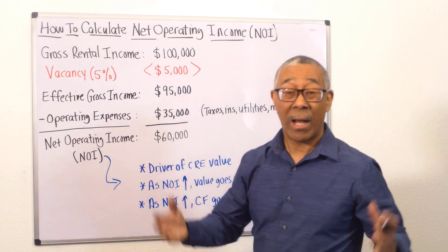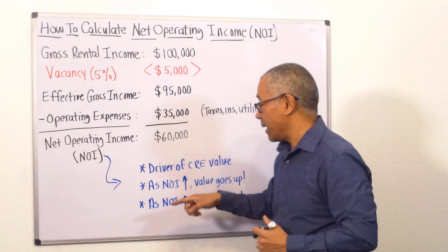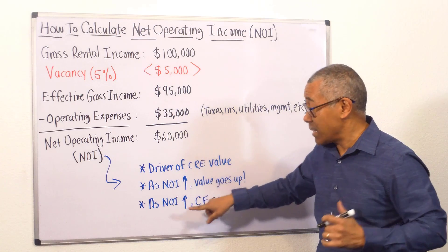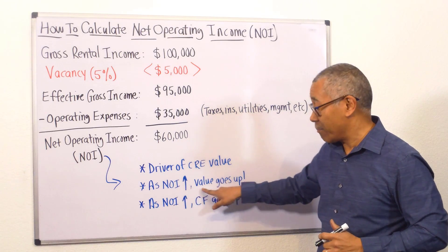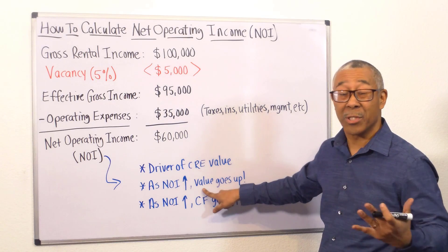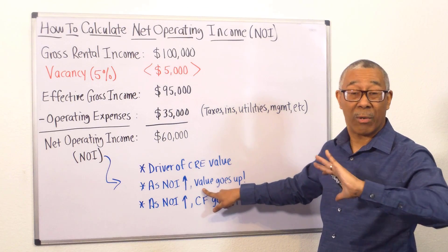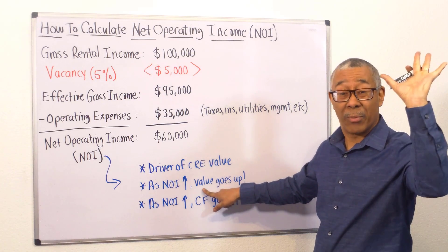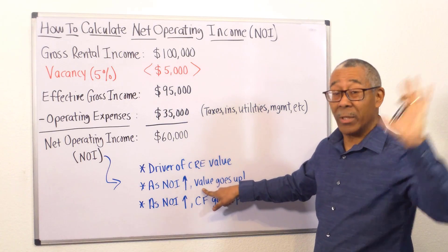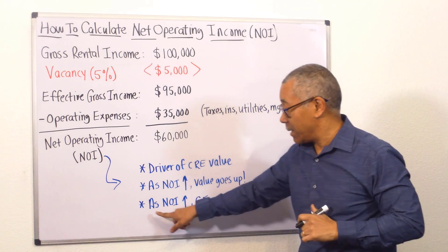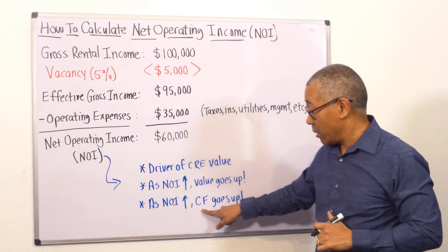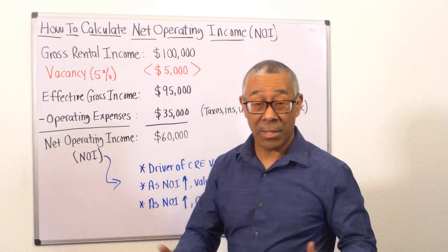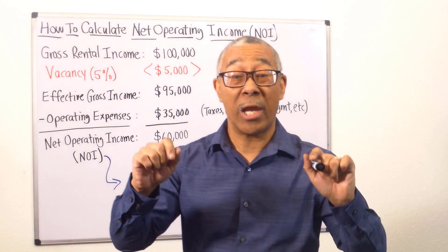Why is the NOI so important? It's because it is the driver of all commercial values. As the NOI goes up, so does the value of the property — that's the principle I've been teaching for many years. As the NOI goes up, we can force the appreciation. That is the beauty of commercial real estate. And as the NOI increases, your cash flow goes up as well. So as the NOI goes up, not only does cash flow go up, but you can force the appreciation.